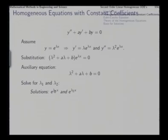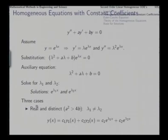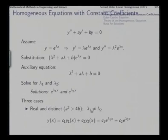If e^(λ₁x) satisfies the equation then any multiple also satisfies it, and similarly for the other solution. A quadratic equation can yield three types of solutions, and according to that there will be certain variations in the form of the general solution. The first case is real and distinct roots: when λ₁ and λ₂ are both real but unequal, that is when the discriminant a² > 4b, the two solutions are linearly independent and their linear combination gives the complete solution.